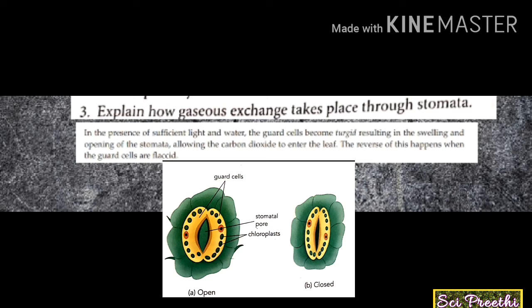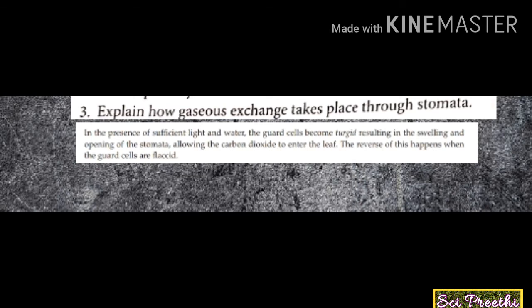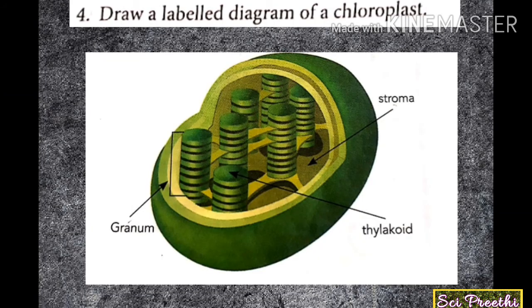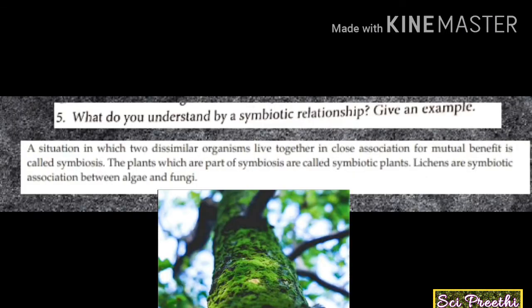Flaccid means weak and soft. Fourth question: draw a labelled diagram of a chloroplast. Each chloroplast contains stacks of thylakoids called grana. The thylakoids look like coins arranged in a stack. The space where grana are arranged is called the stroma.